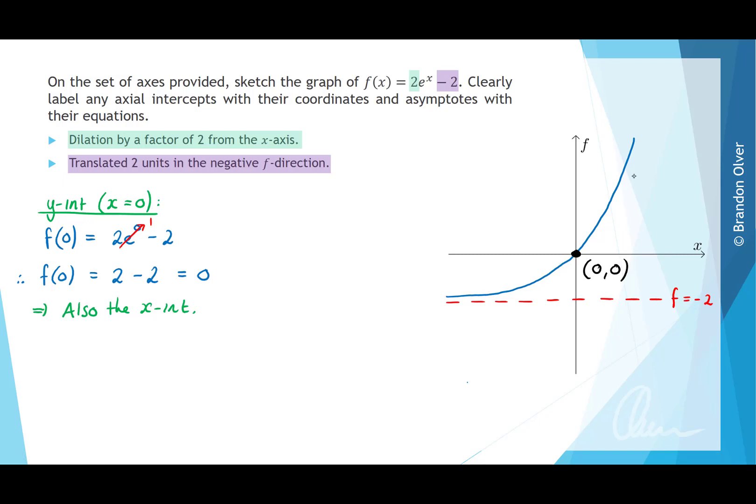So because there's not two axial intercepts for this graph, it's good practice to put another point on. So we're going to consider the case where x = 1. So if x = 1, we're going to evaluate f(1), which is equal to 2e^1 - 2. Therefore, f(1) is simply equal to 2e - 2.